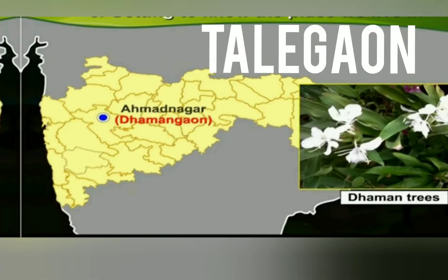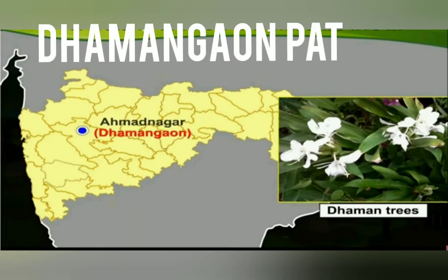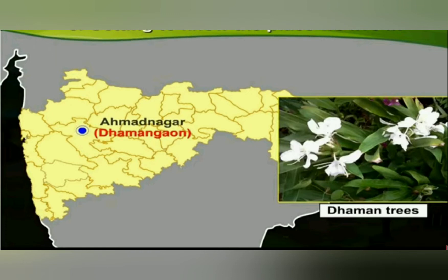Next place: Dhamangau Pat. This Dhamangau Pat is in Ahmadnagar district. It is so named because formerly there was an abundance of dhaman trees. Dhaman is a tree — you can see it in the picture. So many dhaman trees were there in this place, and that's why that particular place got the name Dhamangau Pat. Abundance means many — many dhaman trees were there.